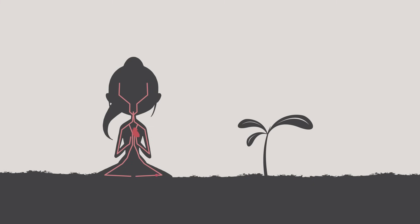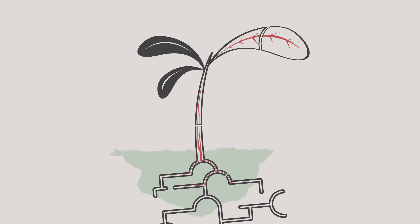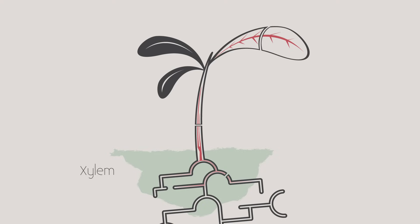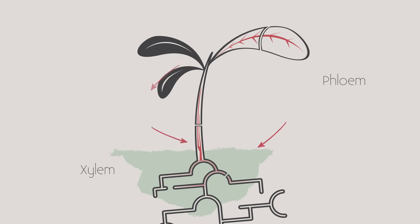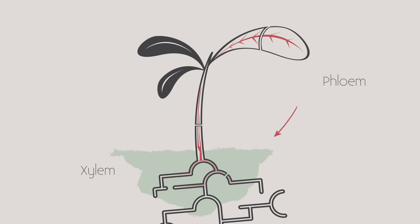We have a beating heart and circulating blood, but what do plants do? Cut a plant open and it doesn't bleed. So what happens instead? Plants have their own systems. They have a xylem which moves water and solutes from the roots to the leaves, and a phloem which moves glucose made in the leaves by photosynthesis and amino acids to the rest of the plant.